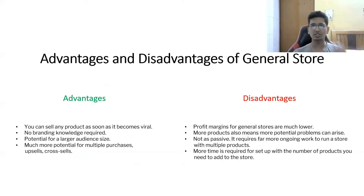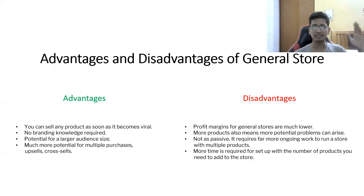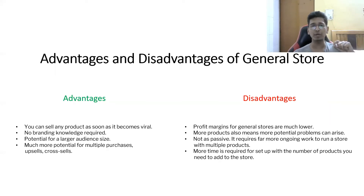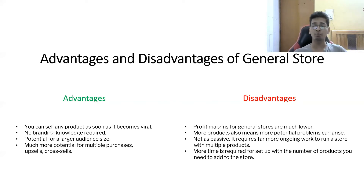Now let's look at advantages and disadvantages, starting with general stores. Advantages: you can sell any product as soon as it goes viral, with no limitations to a specific niche. No branding knowledge is required. There is potential for a larger audience size — you can target households, music, pets, anything. There is also much more potential for multiple purchases through upsells, cross-sells, and bundles across different categories, which can increase your average order value.